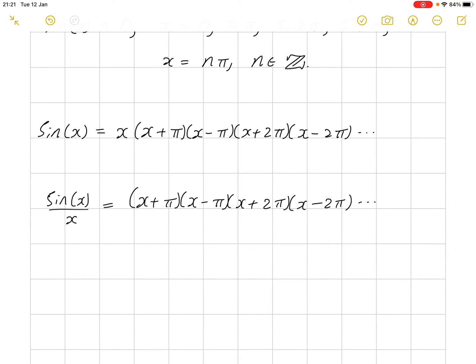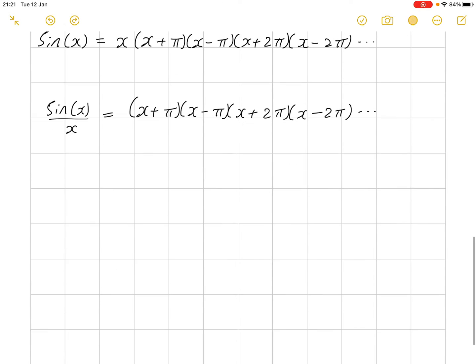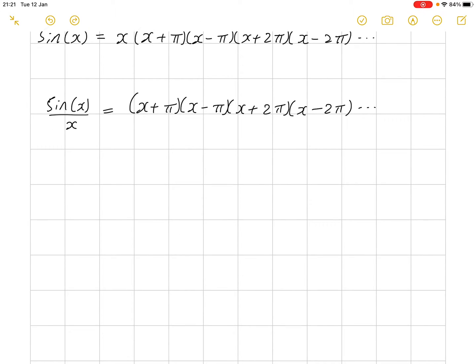So, what we're going to do is multiply this pair, then multiply this pair, and see if we can detect a pattern. So, x plus pi times x minus pi. Immediately, we recognize that this is just a difference of two squares. This is equal to x squared minus pi squared.